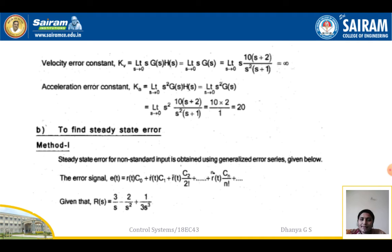For Ka, Ka = limit s tends to 0 of s²·G(s). The equation becomes s²·10(s+2) / (s²(s+1)). The s² terms cancel, leaving limit s tends to 0 of 10(s+2)/(s+1). Applying s = 0 gives 10·2/1 = 20. So Ka = 20.